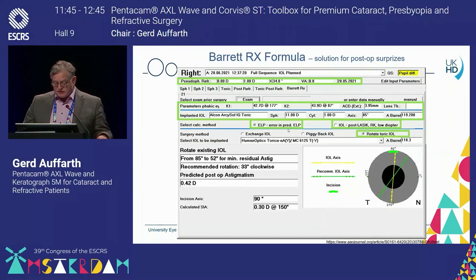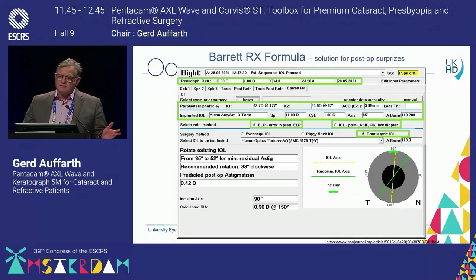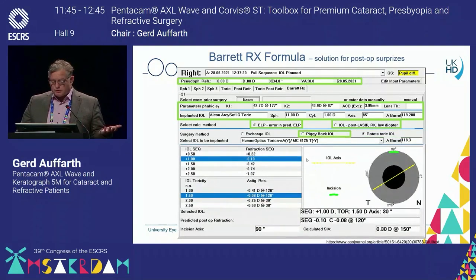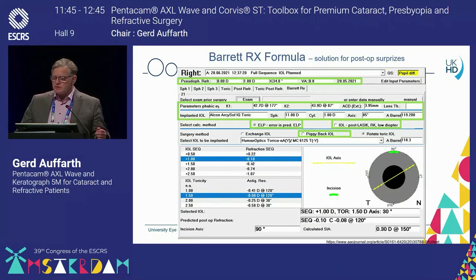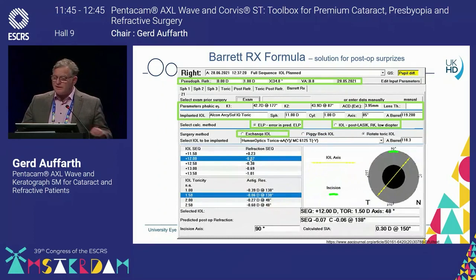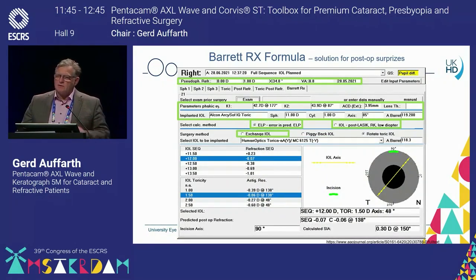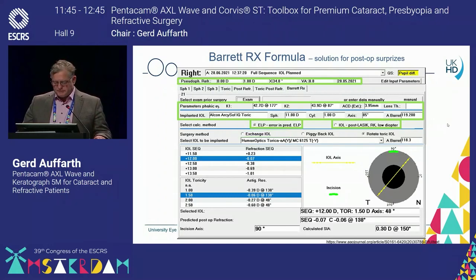Then it will calculate for you automatically three different possibilities. You can rotate the toric IOL, and it will tell you the residual astigmatism. Or they give you the opportunity: what if you just add a toric piggyback — would that be an option? Or if you exchange the IOL, what type of IOL do you have to place in? All these things are automatically calculated for you and help you to get this problem solved.